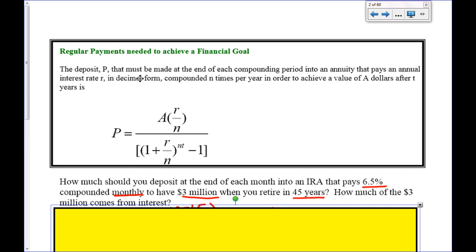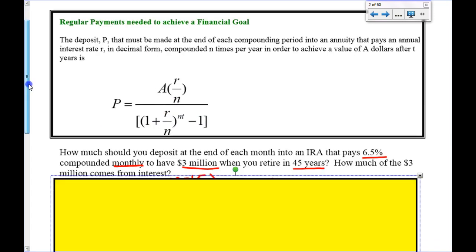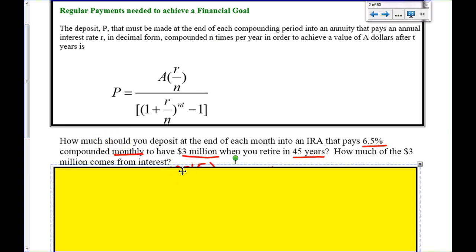The last formula I want to talk about today is what payments you have to make in order to get a goal that you have made for yourself in the future. So, for instance, you want to buy a house. Are you looking at retirement? What do you have to put into your account every month or semi-annually or yearly in order to get to that goal? So, this is the exact same formula that we used just now, except that it's solved for P. That's the payments that you're going to make in time of the year. A is your future amount. So, looking here, we have how much should you deposit at the end of each month into an IRA that pays 6.5% compounded monthly to have $3 million when you retire in 45 years. So, the first thing you're going to want to do is use this formula. I want you to take a moment to do that now.